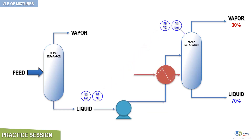However, as we know, pumps increase the pressure of the liquid being handled. So we need to add a third piece of equipment to create a pressure drop, in order to bring the pressure back to 13 bars, as that is the required operating pressure of the second flash unit. This can be accomplished by installing a control valve at the pump discharge, as depicted here.